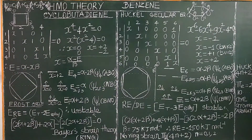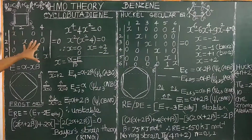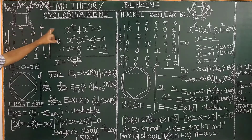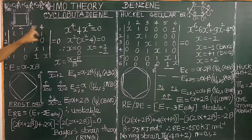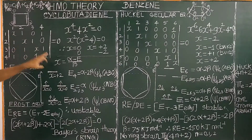Now let us see how Hückel's secular equation is set up. You write 1, 2, 3, 4 for rows and 1, 2, 3, 4 for columns. In the diagonal elements, there are 4 carbon atoms — 1, 2, 3, 4. You fill in the diagonal elements with x, x, x, x first.